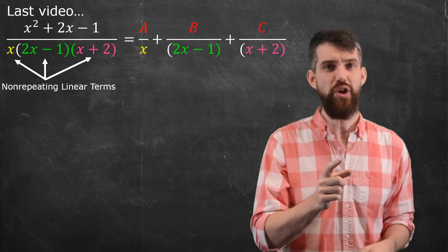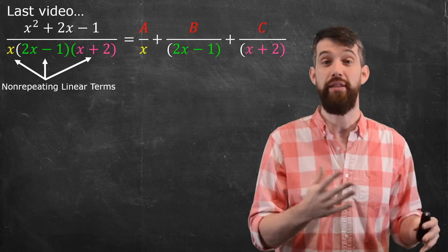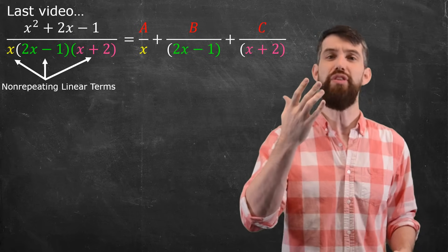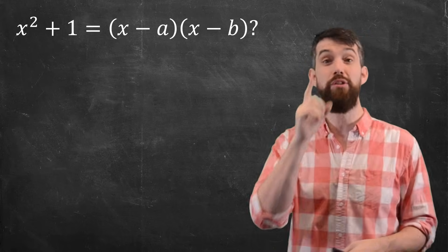But in this video, we want to talk about what happens if it repeats and what happens if there's a term that is non-linear. For example, consider this quadratic term. Imagine this was in the denominator, something like x squared plus one.